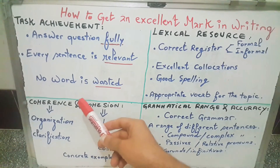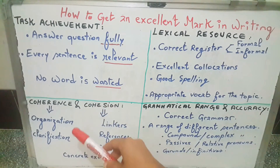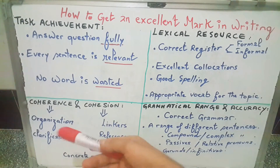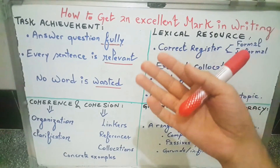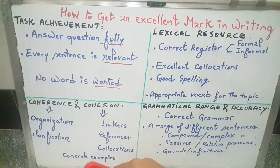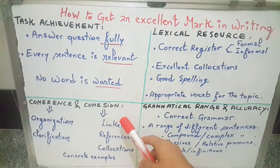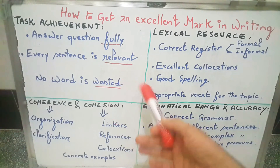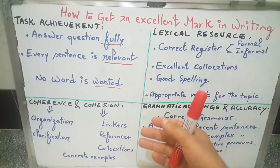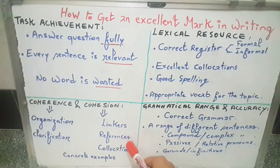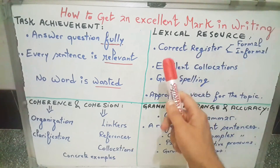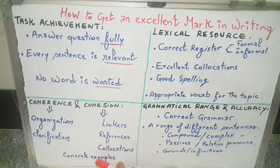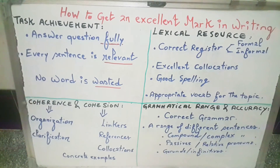Another two important notions are coherence and cohesion. Coherence has to do with the organization, clarification, and connection of ideas — it's how you write the topic sentence, how you develop and support it with arguments, and how you conclude your essay. Cohesion, on the other hand, is achieved by using cohesive devices like linking words, conjunctions, subordinating conjunctions, correlative conjunctions, adverbial conjunctions, and references like pronouns and collocations. Examiners also like to see concrete examples, very often from your own life, to back up your argument.